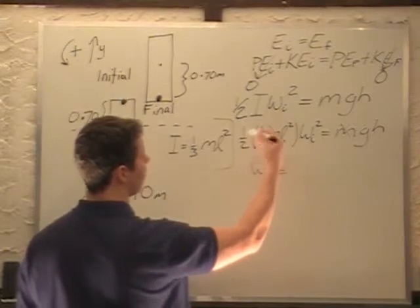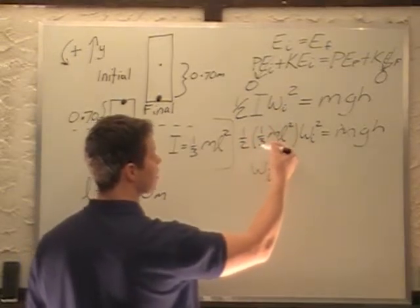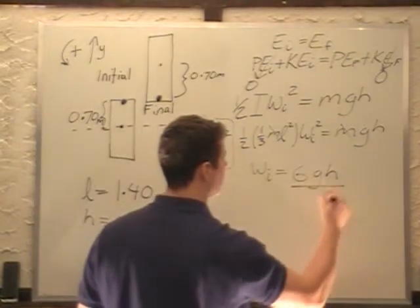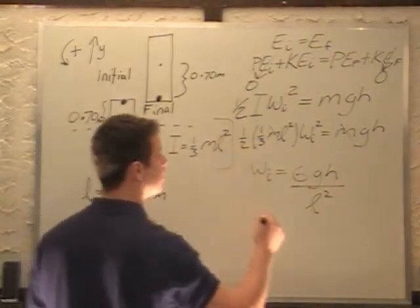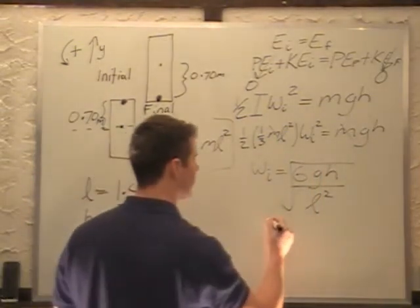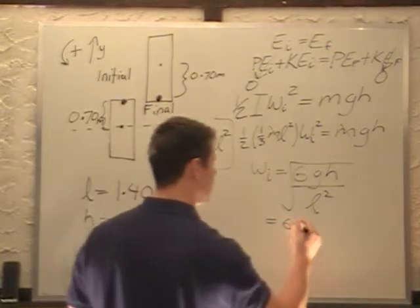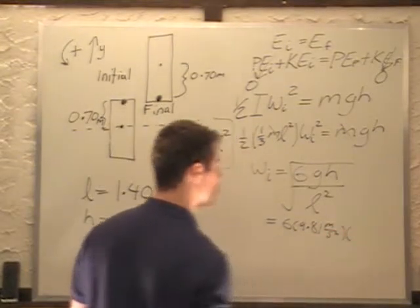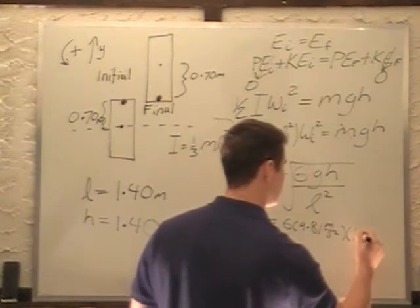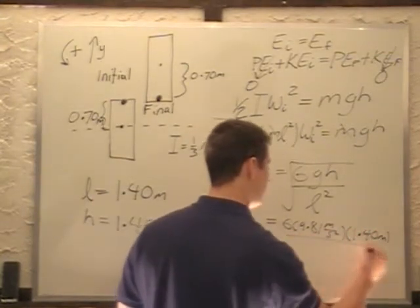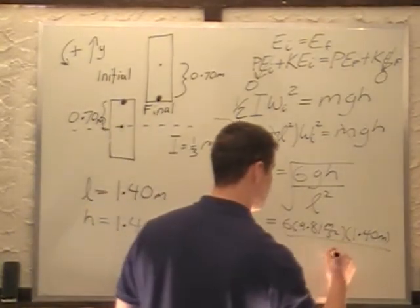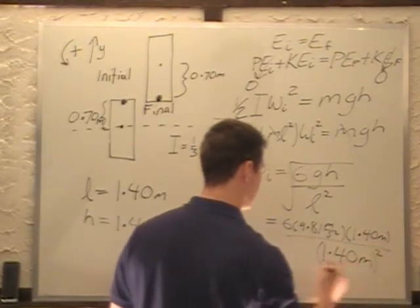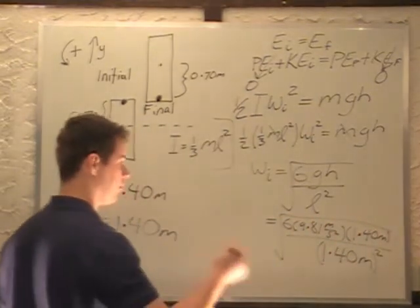So first, one-half times one-third gives me one over six, so I multiply the six to the top. I have six times g times h divided by l squared, and then I take the square root of it all. Let me plug in the values. I have six times g, 9.81 meters per second squared, times h which is my 1.40 meters, all divided by l squared, 1.40 meters squared, all under the square root sign.